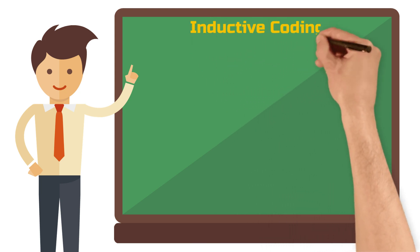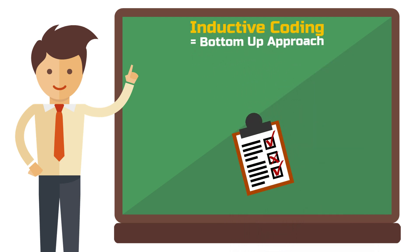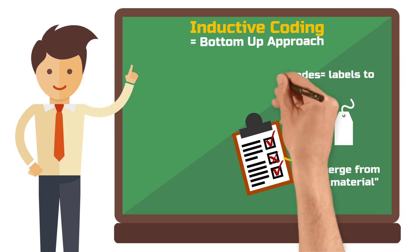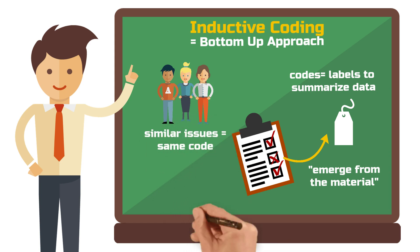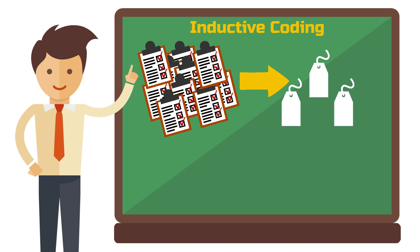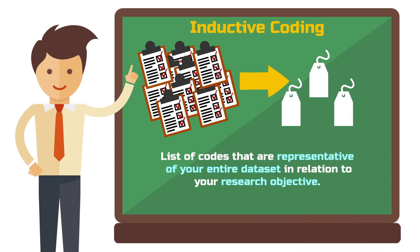But now let's see how we can create codes from scratch in a bottom-up inductive fashion. Inductive coding means that your codes emerge from the material itself. Codes are just labels that summarize a bunch of similar data. So if three of the employees, for example, talk about a similar issue they encountered, you give these parts in your interview transcripts the same code — like 'being overwhelmed by the functionalities of the virtual meeting room.' The goal is to reduce or summarize all your material, in our example all interviews, to the essentials.